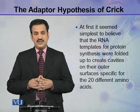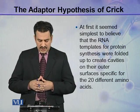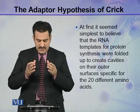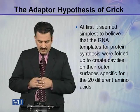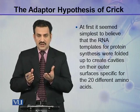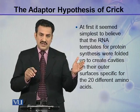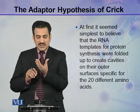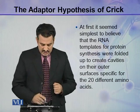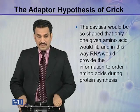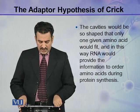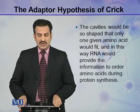While explaining the central dogma, at first it seemed simplest to believe that RNA templates for protein synthesis were folded up to create cavities on their outer surfaces which are specific for 20 different amino acids. On this RNA molecule, which has been synthesized from DNA, there are 20 different types of cavities for 20 different types of amino acids. The cavities would be so shaped that only one given amino acid would fit, and in this way RNA would provide the information to order amino acids for the synthesis of protein.